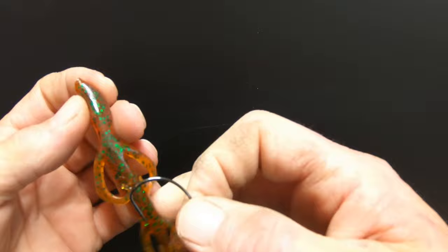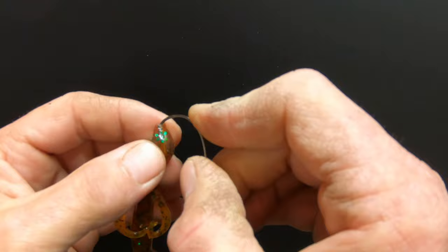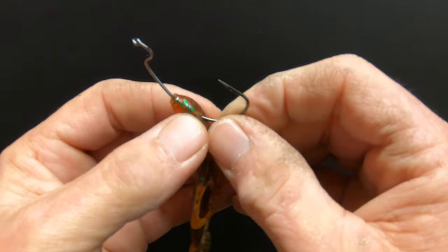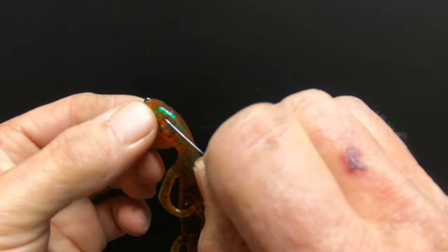So, you want to take and put your hook in about a quarter of an inch, come through like this, go all the way up. You'll spin it around. Push it up.